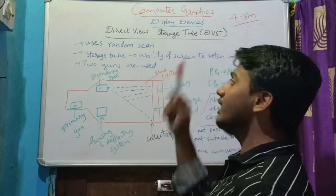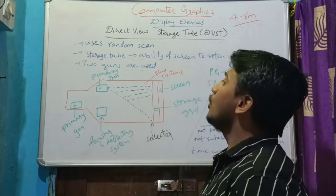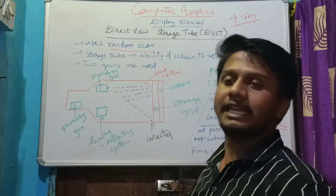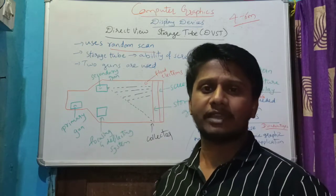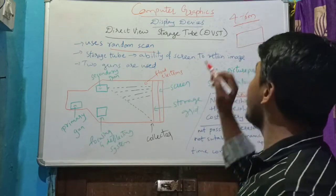That is DVST, which stands for Direct View Storage Tube. DVST uses random scan technique. Hope you remember random scan technique. What happens in random scan technique? The beam will be emitted to the screen positions where you want to draw the image.